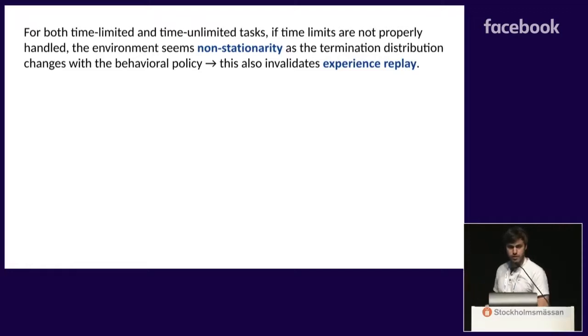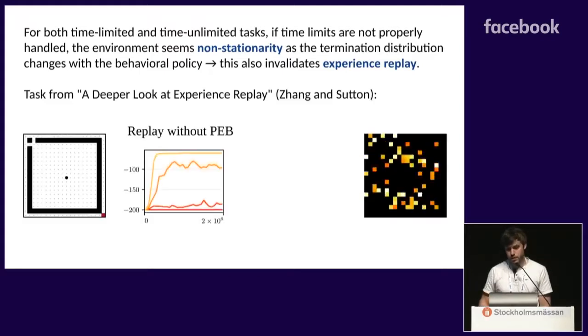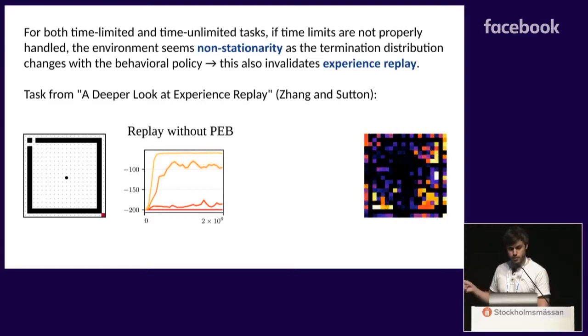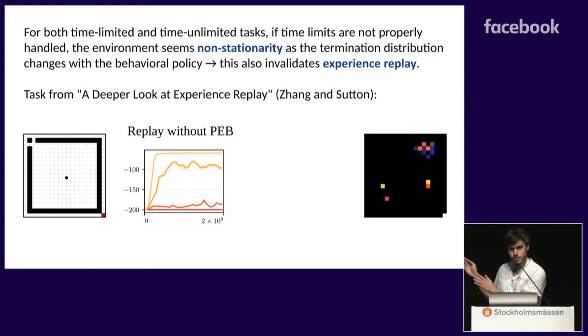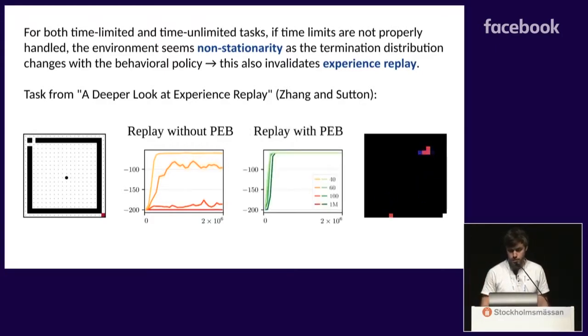So, finally, we saw that for both cases, you have the same kind of non-stationarity, because your agent interacts with the environment and it experiences timeout termination in different parts. And these timeout terminations change with the behavior. And this actually is another problem. It doesn't work with Experience Replay. It makes your experiences obsolete. This is a simple task that is from a deeper look at Experience Replay from Zhang and Sutton. We took the exact same maze, so the agent starts on the dot and has to reach the red square. And they showed that if you have a larger buffer Experience Replay, the performance decreases. On the right, you can see the distribution of timeout terminations. And you can see that it changes with the behavior. And just by applying partial episode bootstrapping, we showed that actually you almost have no effect.